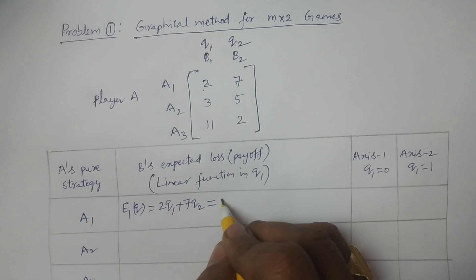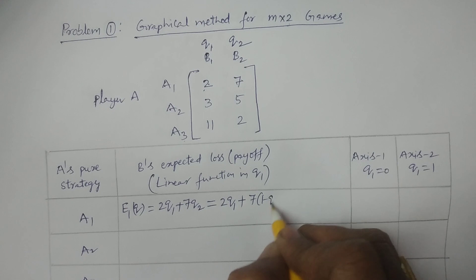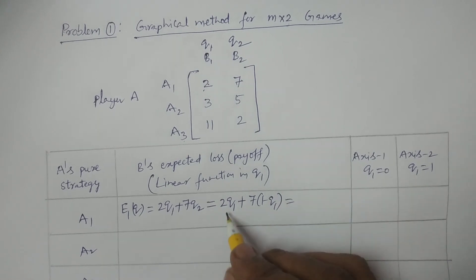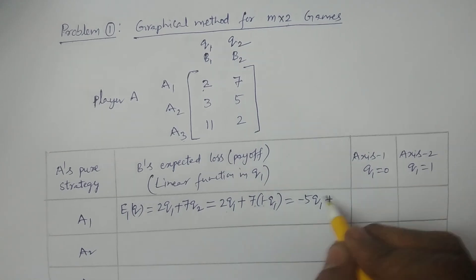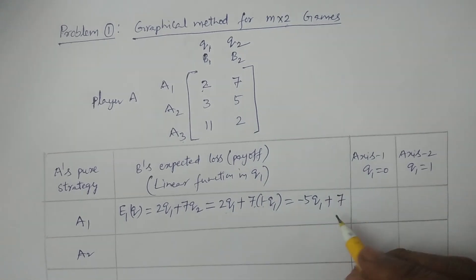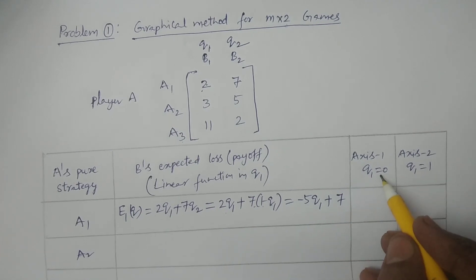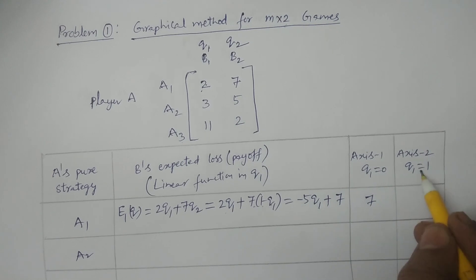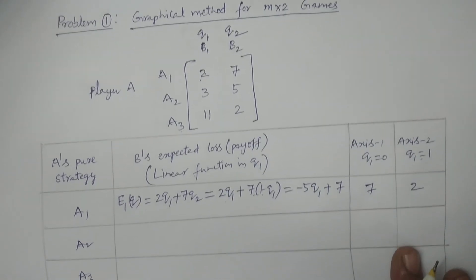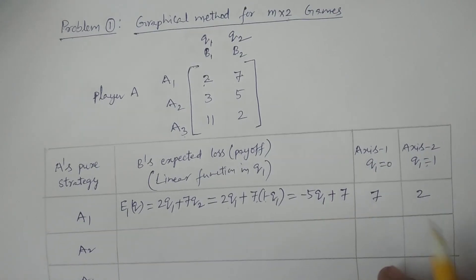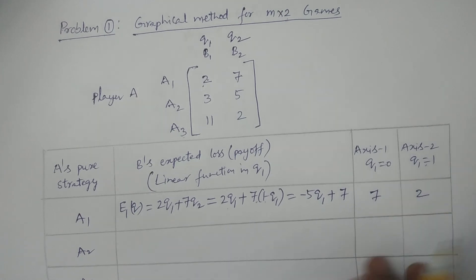Now convert in terms of q1: 2q1 plus 7 into (1 minus q1), which equals 2q1 plus 7 minus 7q1, giving minus 5q1 plus 7. This is the linear function in q1. Substituting q1 equals 0 gives 7; substituting q1 equals 1 gives 7 minus 5 equals 2. So the points are 7 and 2 on axis 1 and axis 2 respectively, where q1 equals 0 and q1 equals 1.